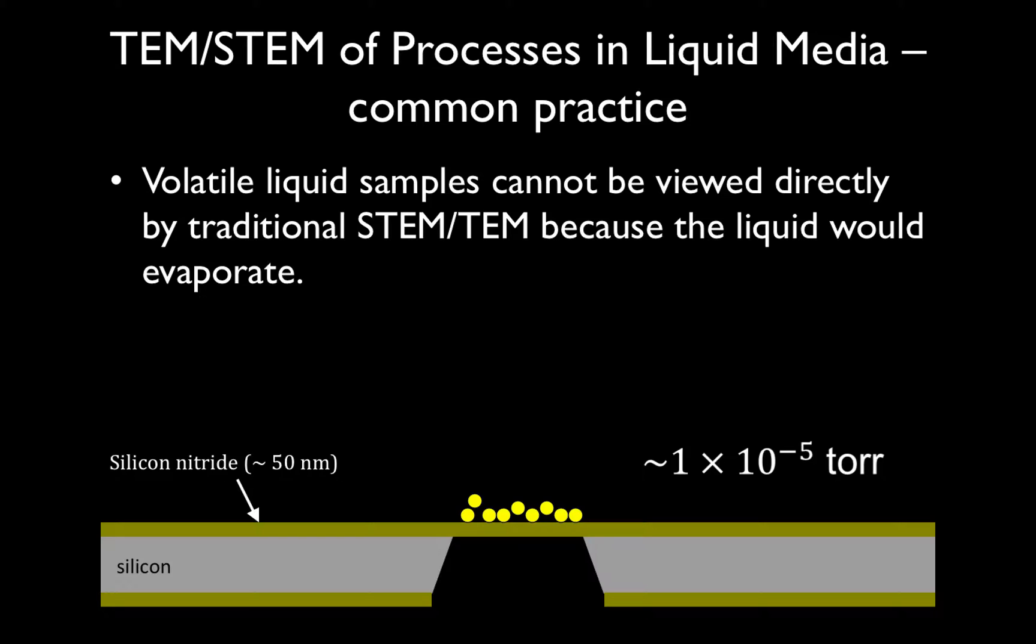What people have done previously is they've taken these systems, dried out a system, taken a picture of it, or frozen it very quickly and taken a picture. You can do this over and over at different time steps in order to come up with a little flip book to understand the dynamics of what's going on in your system. This is very tedious, so it would be nice if we could overcome this limitation of the electron microscope so that we can image aqueous solutions directly with the electron beam to get the high resolution the electron microscope provides.